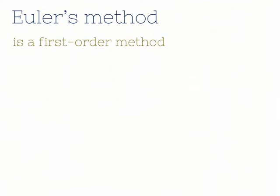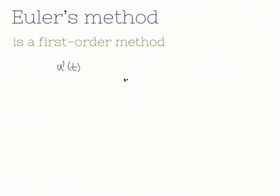We started with a definition of a derivative from calculus. Recall the definition of a derivative where u is a function of t: u prime of t, using the prime to denote the derivative, is equal to the limit when delta t goes to zero of the function u at t plus delta t, minus u at t, divided by delta t.